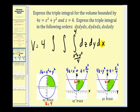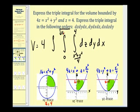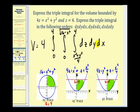For y as a function of x, looking at the xy-trace, y goes from zero up to the circle. Solving for y gives the square root of 16 minus x squared. For x, looking at either the xy-trace or xz-trace, x starts at zero and goes out to four. This completes the first triple integral: integrating with respect to z, then y, then x.